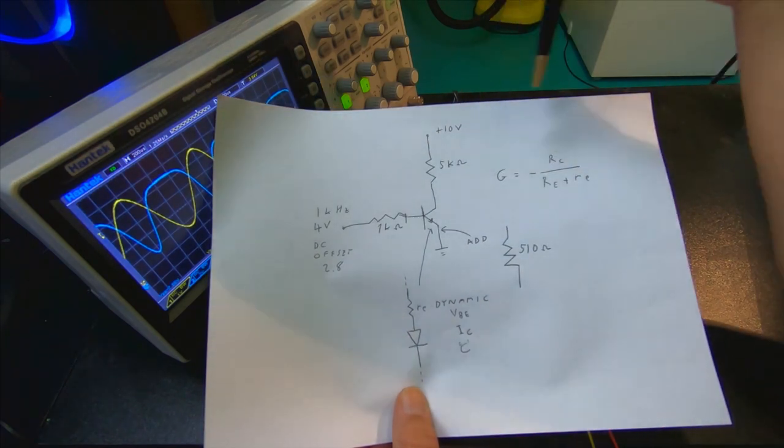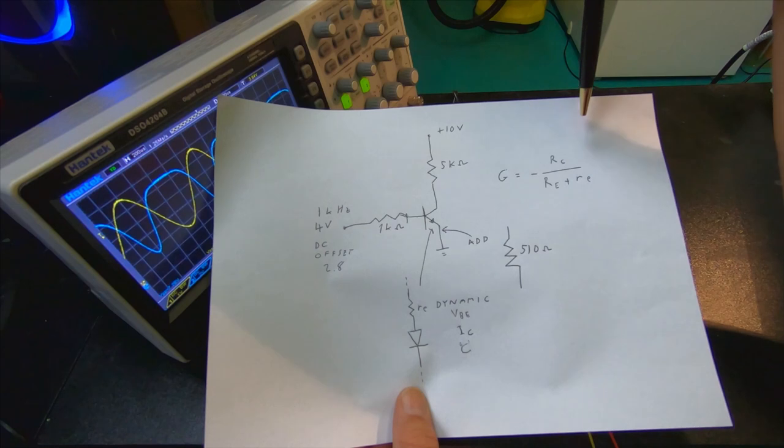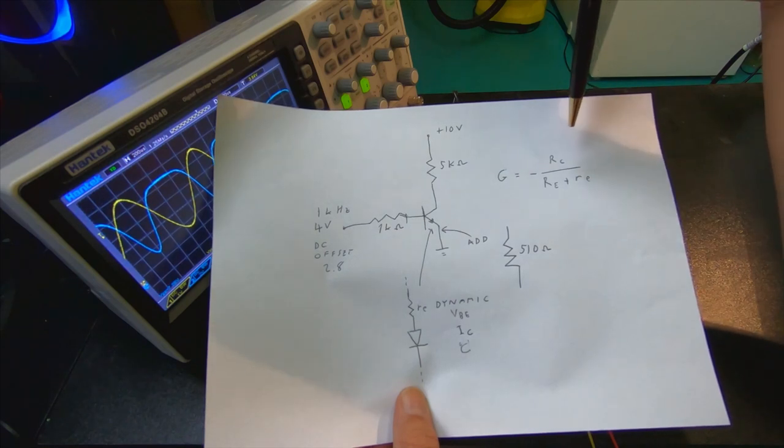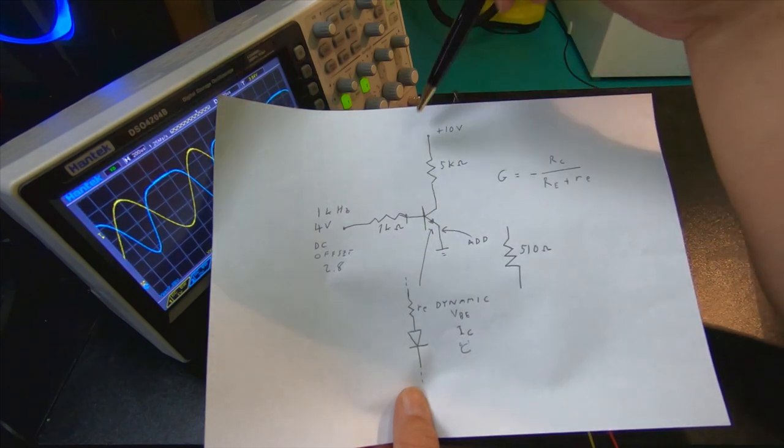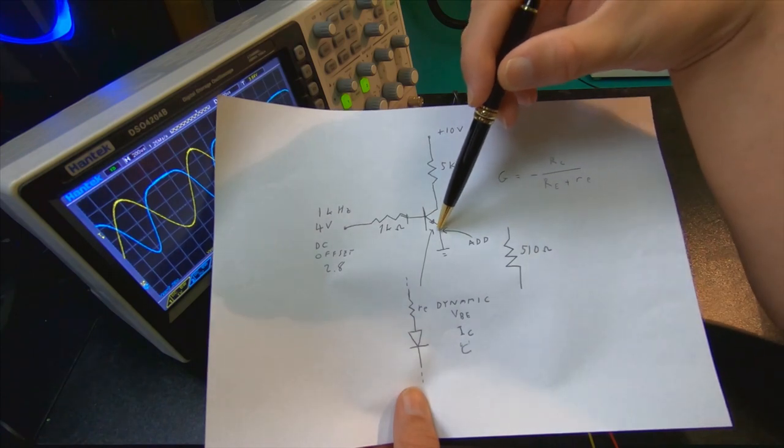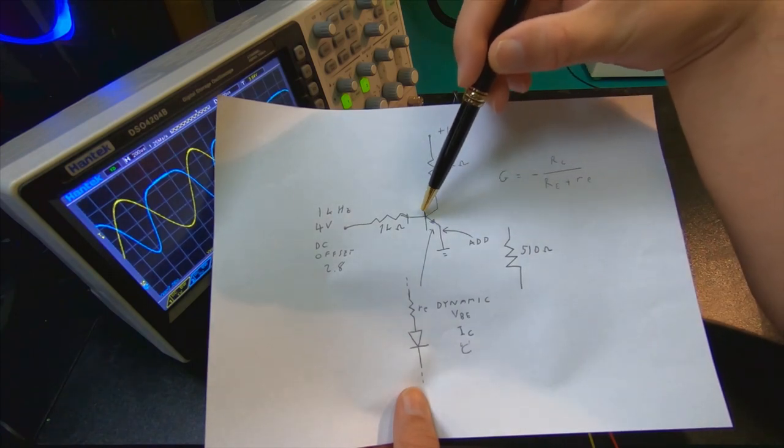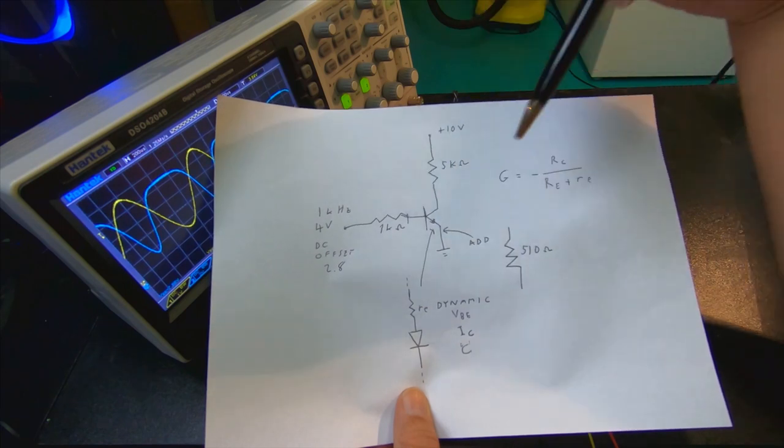What this leads to is that the gain will be very high, because you have this hidden resistor, a dynamic resistor, in the base-emitter circuit.